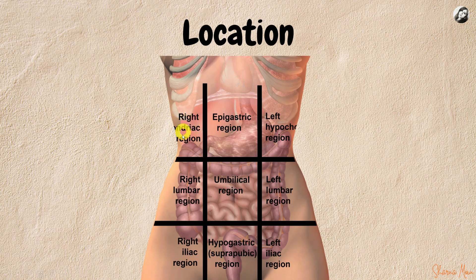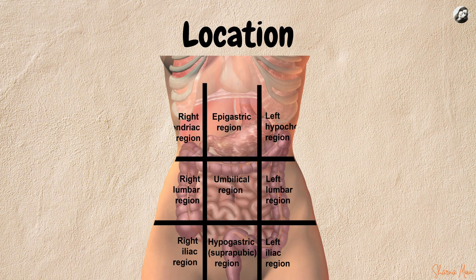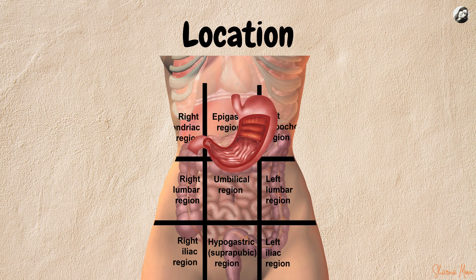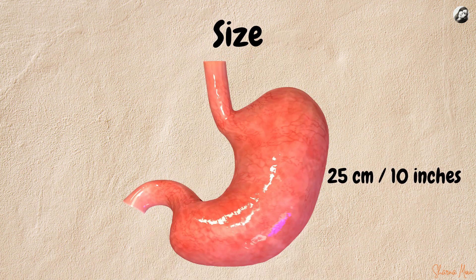Now let us see where the stomach is situated. We know there are nine regions of the abdomen: the right hypochondrium, the epigastric region, the left hypochondriac region, the right lumbar region, the umbilical region, the left lumbar region, the right iliac fossa, the hypogastric region, and finally the left iliac fossa. Among these, the stomach lies obliquely in the epigastric region, the left hypochondriac region, and the umbilical region.